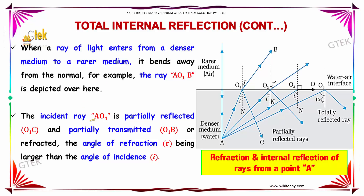When a ray of light is incident from a denser medium to a rarer medium, it bends away from the normal. For example, the ray A-O1-B is depicted here. The incident ray A-O1 is partially reflected as O1C and partially transmitted or refracted as O1B. The angle of refraction R is larger than the angle of incidence.